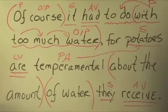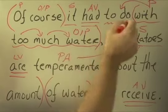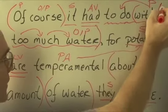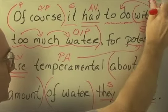That infinitive phrase, to do with too much water, is functioning as a noun. It had what? To do with too much water. All of this phrase now is functioning as the direct object of the verb had. Sorry about that.